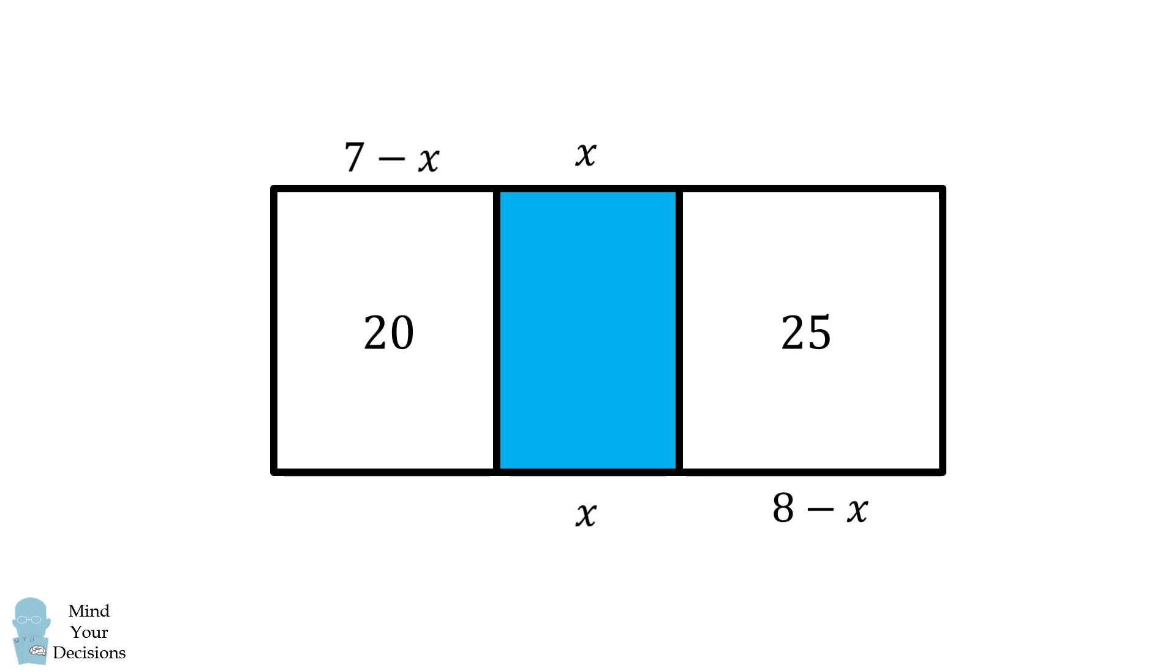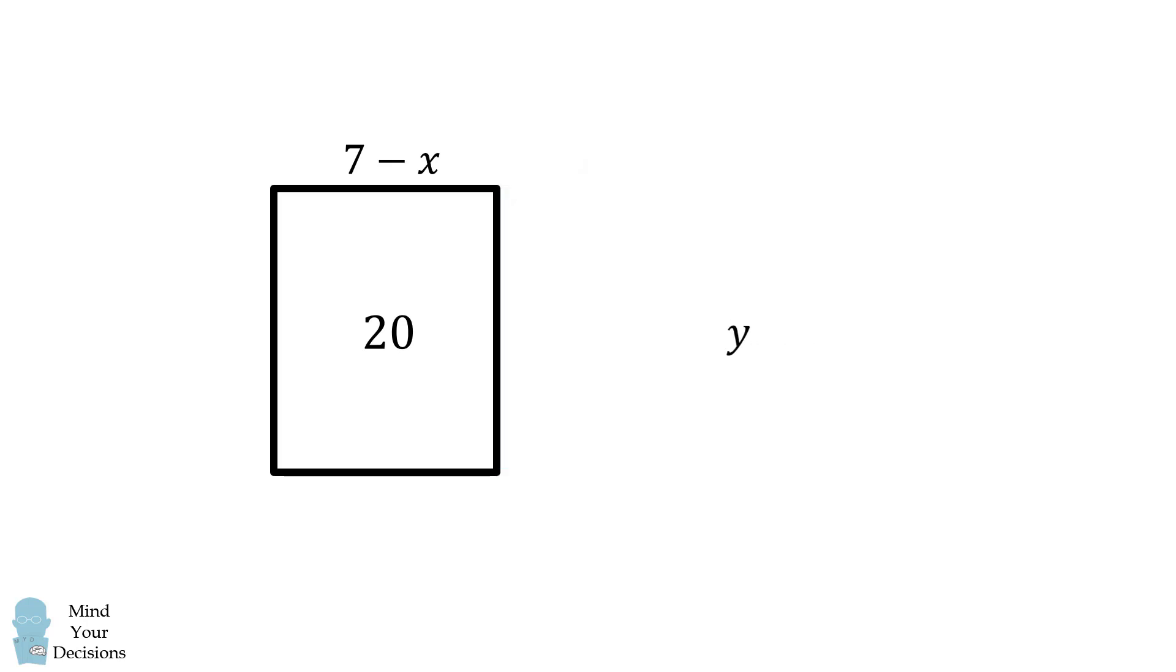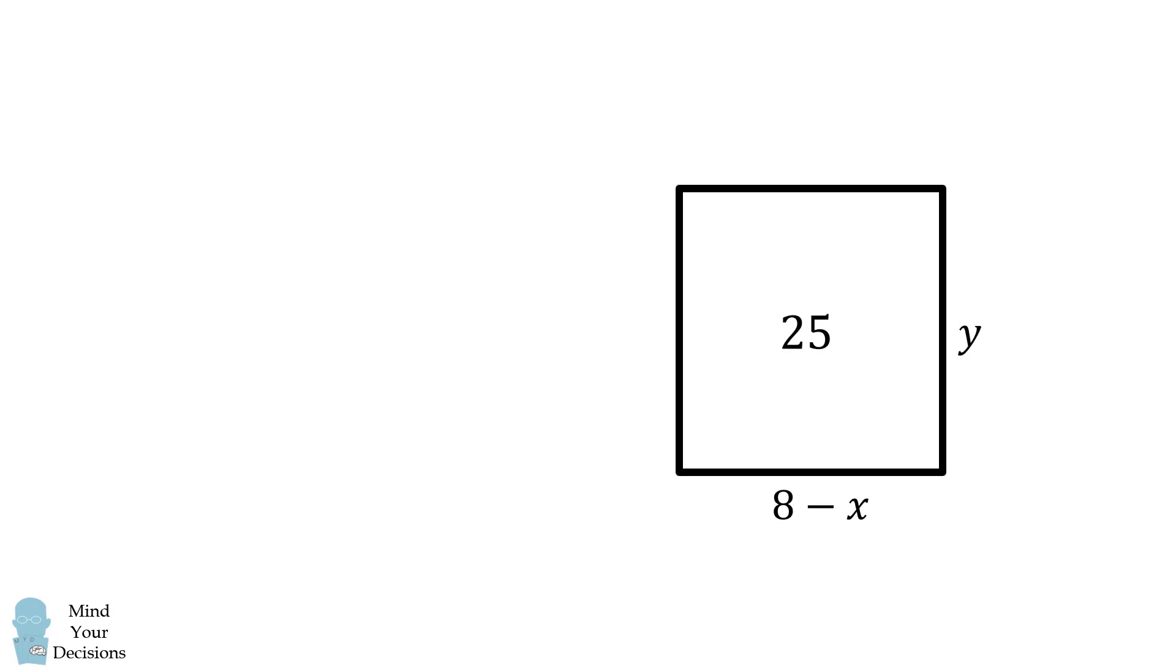Now suppose all three rectangles have a common height that's equal to y. We can calculate the area of the first rectangle in terms of x and y. 7 minus x multiplied by y will be equal to the area which is equal to 20. We can do a similar calculation for the third rectangle. Its area is equal to 25, and that will be equal to 8 minus x multiplied by y.